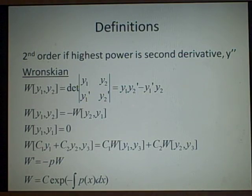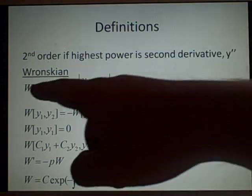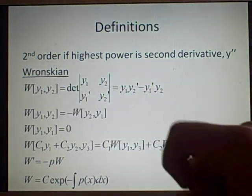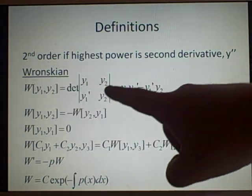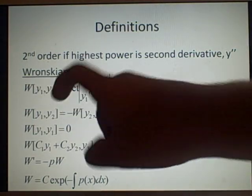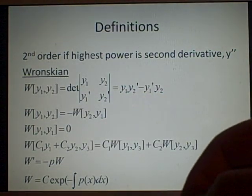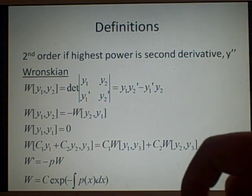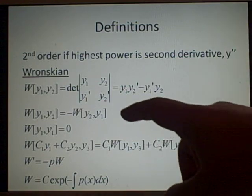And one thing we'll need for this is the Wronskian. We use this if we are given a solution, which I'll show you later. Now the Wronskian is defined as W of y1, y2, where you have this is the determinant of, now y1 and y2 are your two solutions to your homogeneous equation.